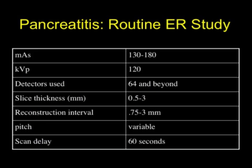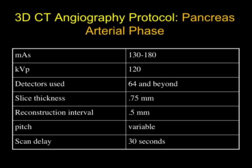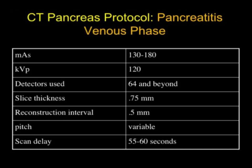For a typical protocol, three millimeter thick sections every three millimeters might work, though we tend to use thinner collimation and do reconstructions as necessary. Dual phase imaging, particularly when thinking about any type of vascular complication, is really where you need to go.